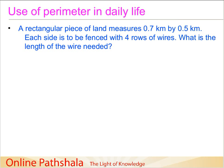Let us continue our discussion on finding the perimeter. The problem states that a rectangular piece of land measures 0.7 km by 0.5 km. Each side is to be fenced with 4 rows of wires. What is the length of the wire needed?